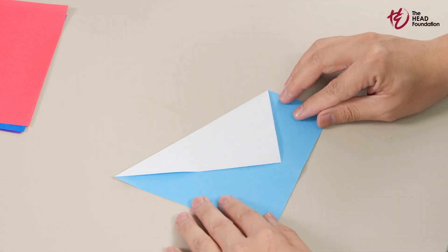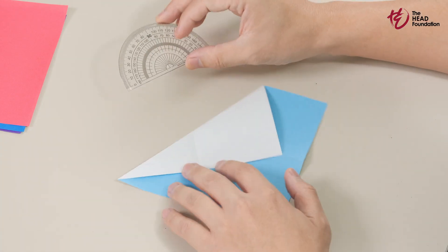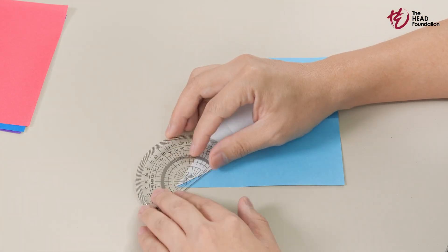And there you have it. With just two folds, you've created a 30-60-90 triangle. But let's not just take our word for it. If you grab a protractor, you can measure the two angles to check our work.